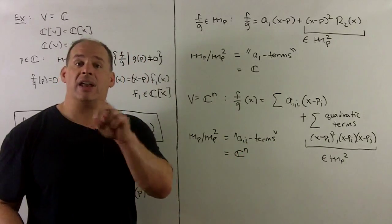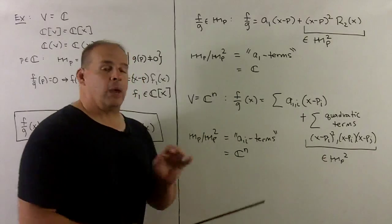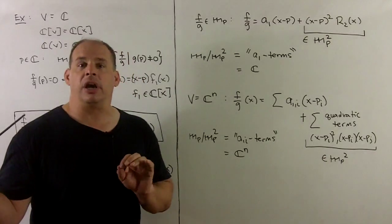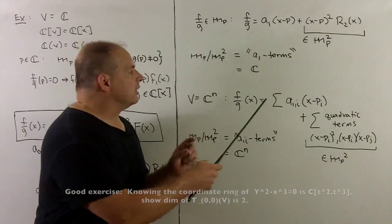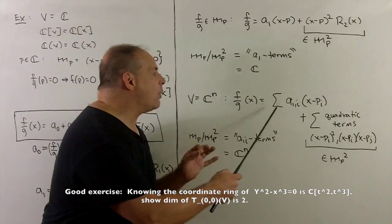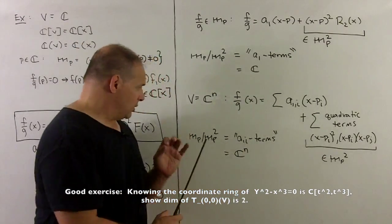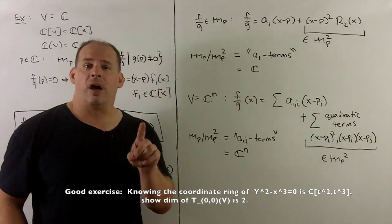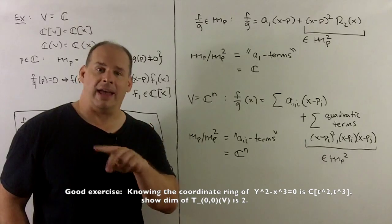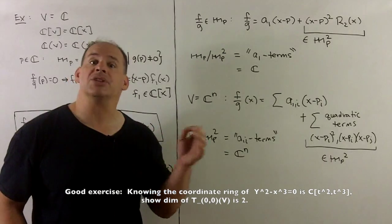If we go to C^n for a variety, we can do the same exact expansion here. It needs a little bit more detail. But the idea is if we take the linear terms in the expansion, now we have n of those instead. So we take the quotient, we're going to get C^n. Linear functionals—we're going to have n dimensions of those.